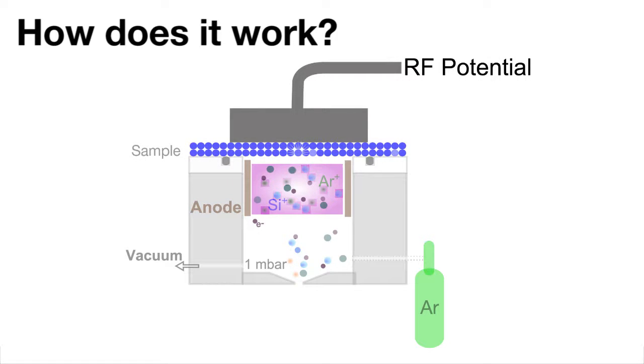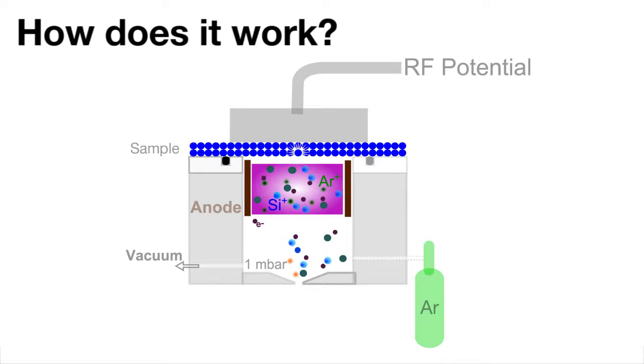The anode is at ground while the sample is supplied by a pulsed radiofrequency potential from its back. The plasma creates argon ions that bombard the sample surface, causing sample material to be etched.